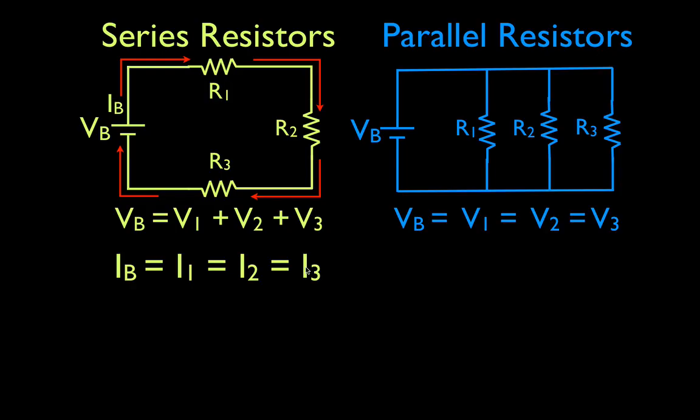The current does not get destroyed. The energy that the electrons carry gets used, but the current does not get destroyed — the electrons don't get destroyed. Whatever electrons leave one side of the circuit will enter the other side of the circuit and travel completely around that circuit.